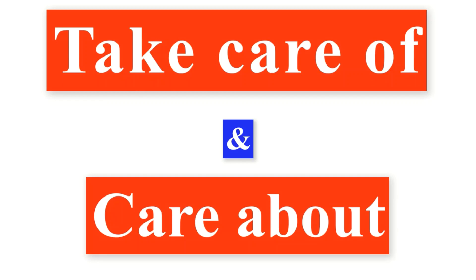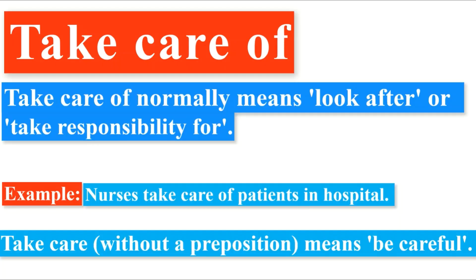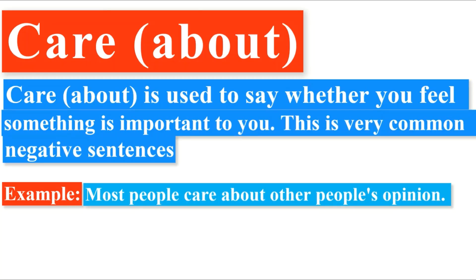The next pair of words is 'take care of' and 'care about.' 'Take care of' normally means 'look after' or 'take responsibility for.' For example: 'Nurses take care of patients in hospital.' 'Take care' without a preposition means 'be careful.' On the other hand, 'care about' is used to say whether you feel something is important to you. For example: 'Most people care about other people's opinions.'